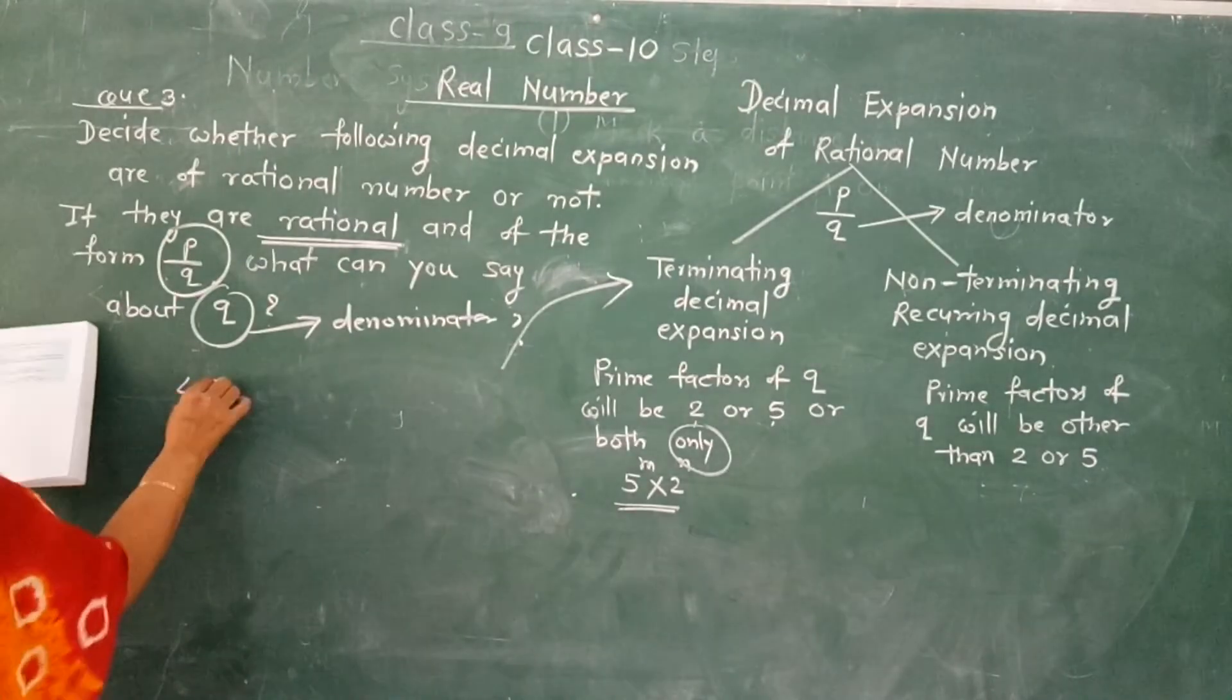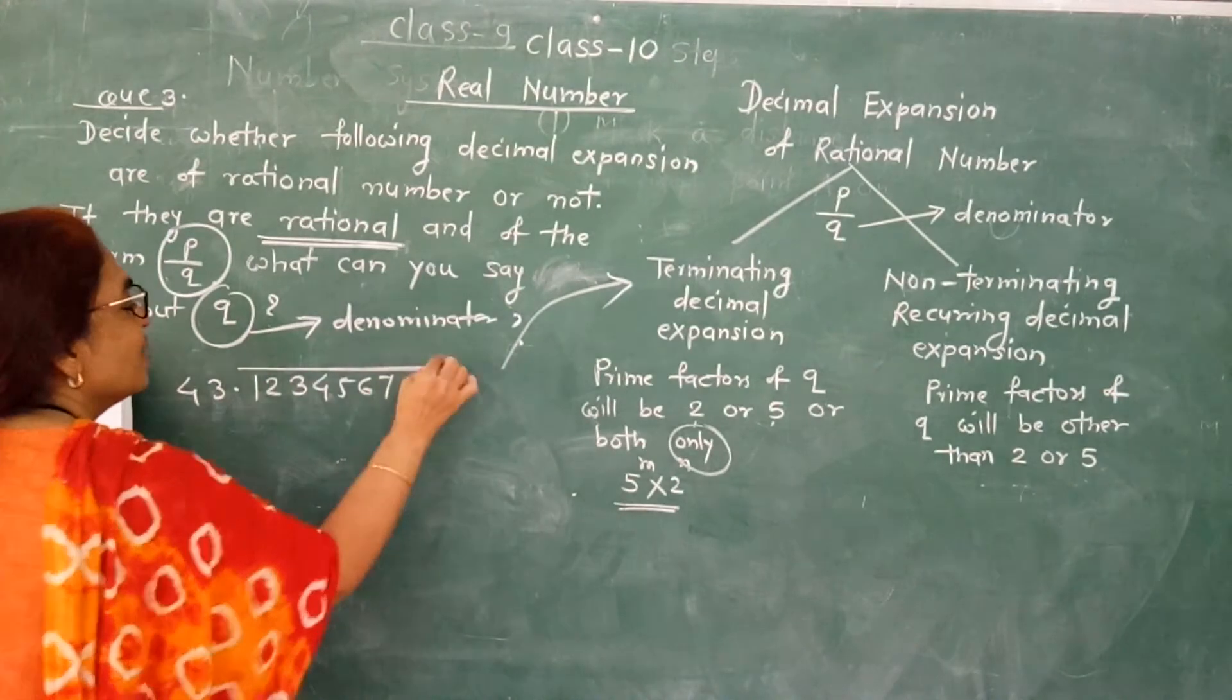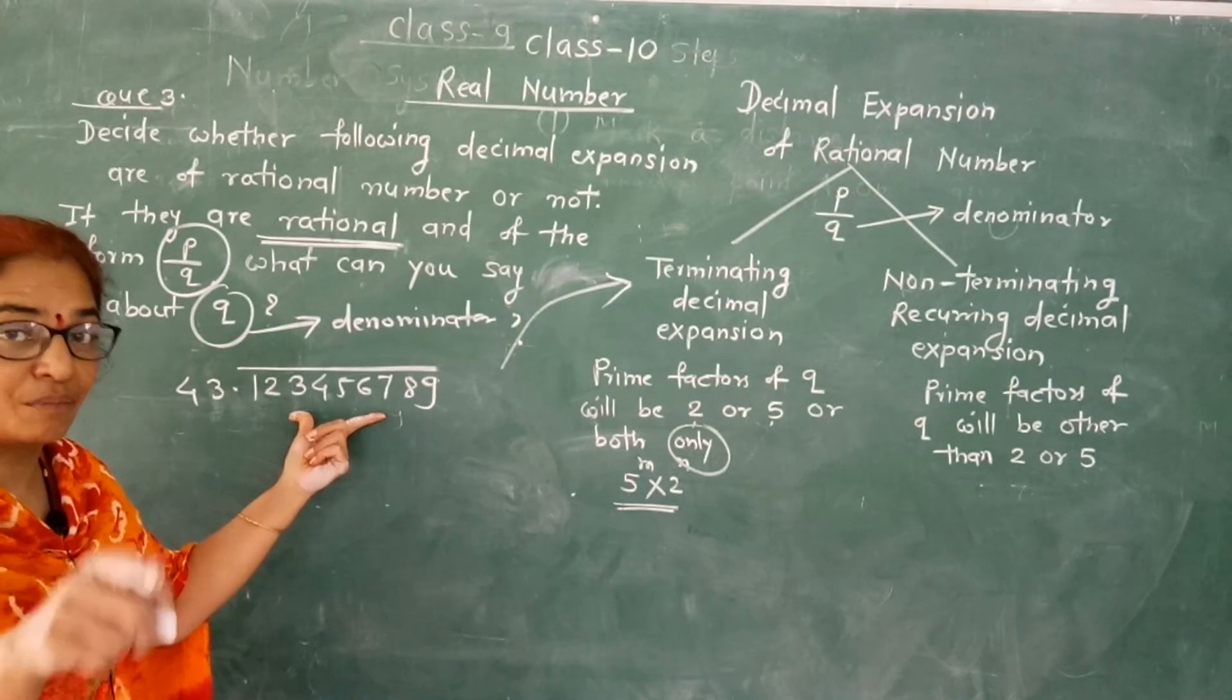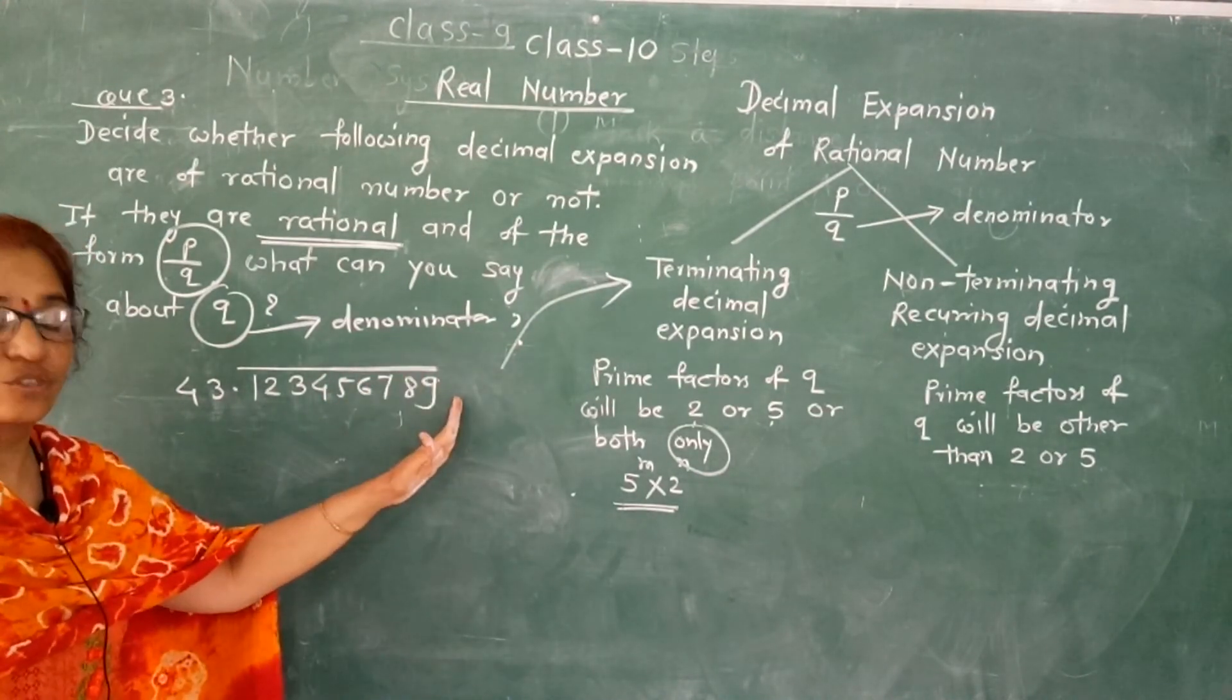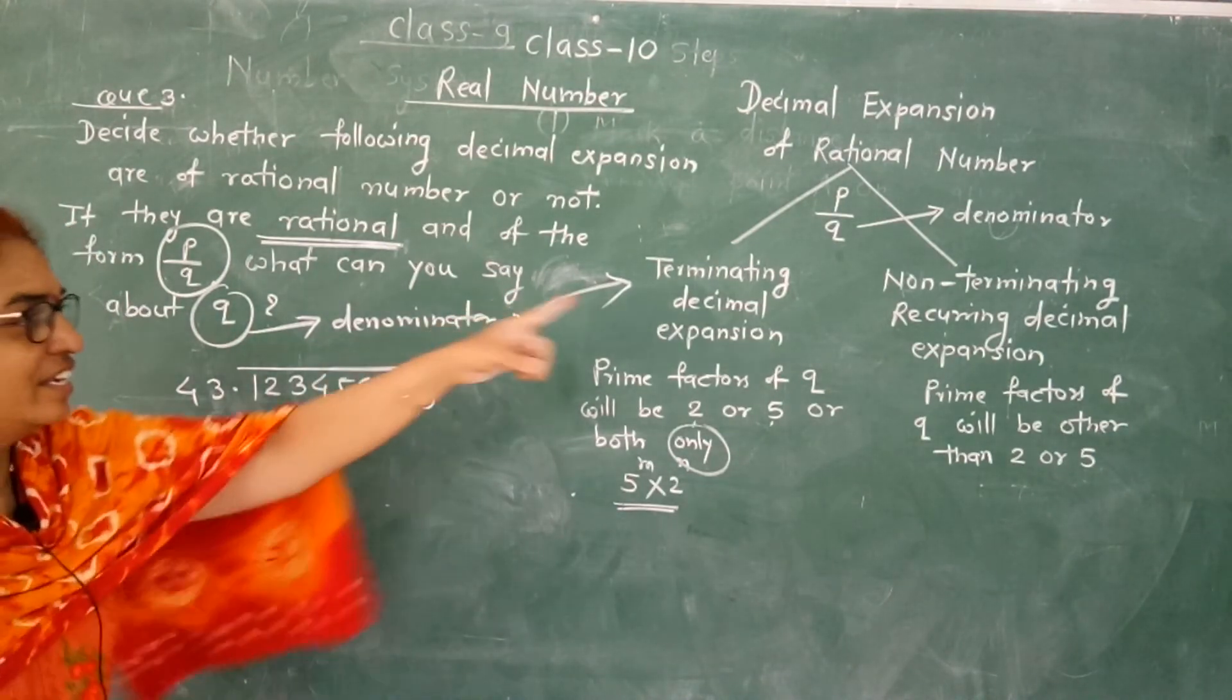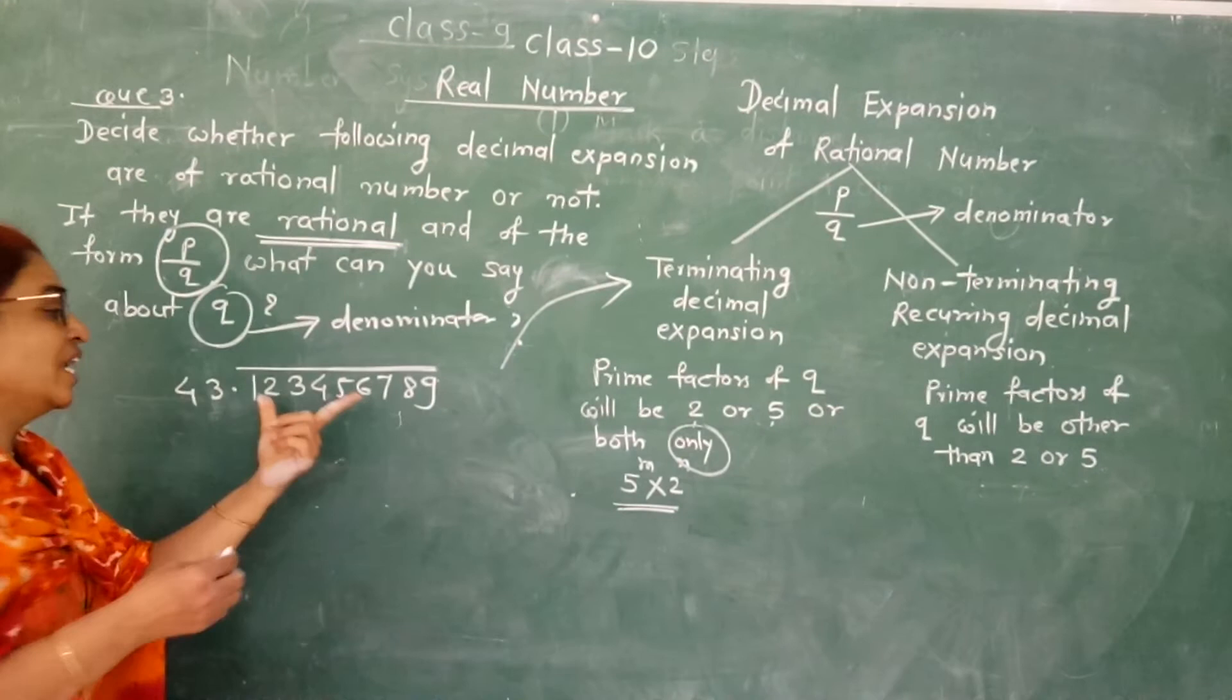Third example: 43.123456789 with the bar. Now this is the decimal expansion. Is it rational number or irrational number? It is rational number, because it is non-terminating but recurring. This is non-terminating recurring decimal expansion.